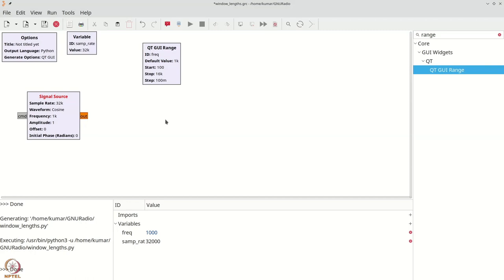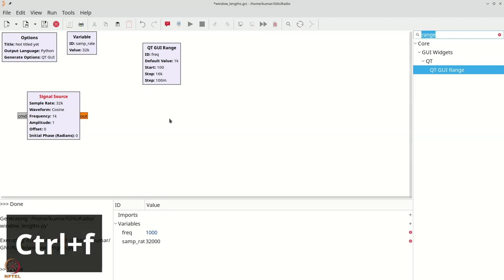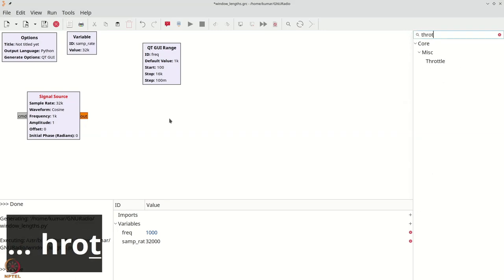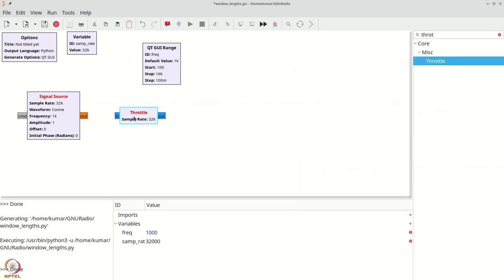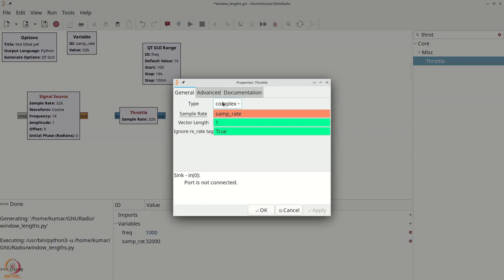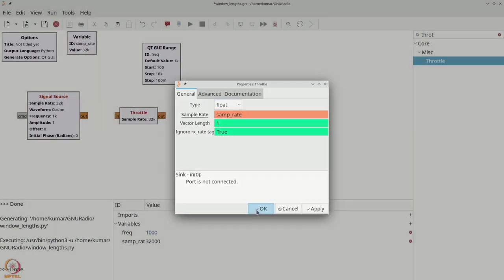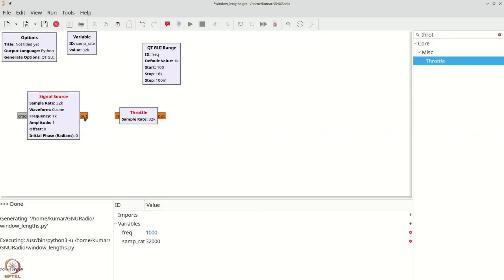We can now add a throttle. Command F or control F, type throttle, grab the throttle, double click it, change the type to float, say OK. We then connect the signal source to the throttle.